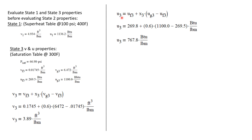Let's also calculate the internal energy for state three. U_3 is U_f plus quality times (U_g minus U_f). Using the table values, the internal energy at state three is 767.8 BTUs per pound mass.